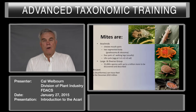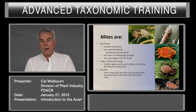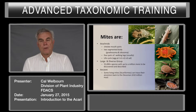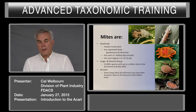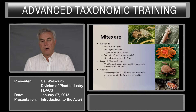Mites are arachnids. They have chelate mouthparts, a two-segmented body consisting of anathosoma and idiosoma. They usually have four pairs of walking legs. Their life cycle consists of an egg, a pre-larva, up to three nymphal instars, and the adult.